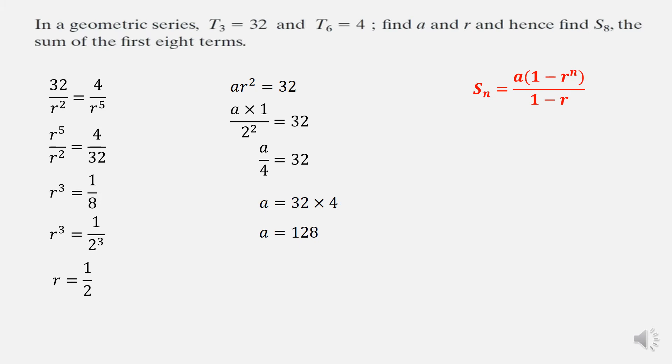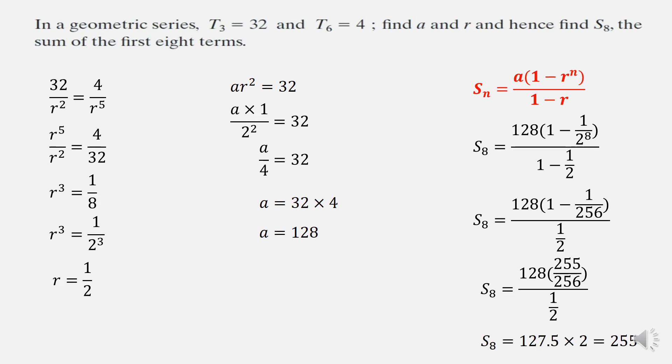So my formula for the sum of a geometric series is here from the formula book, substituting in for a and r. This time we have a half to the power of 8. The 2 to the power of 8 is 256. So you've 1 minus 1 over 256, which is 255 over 256. You can work out the top line. Dividing by a half has the same effect as multiplying by 2. So we get 127.5 multiplied by 2. So the sum of the first eight terms is 255.